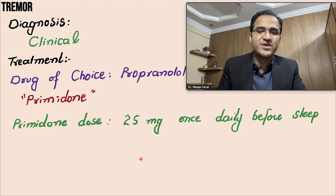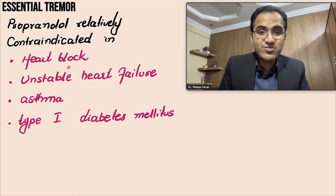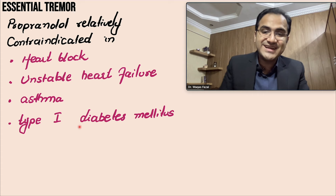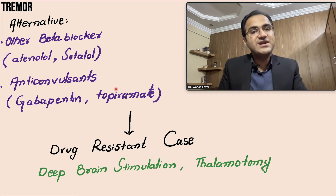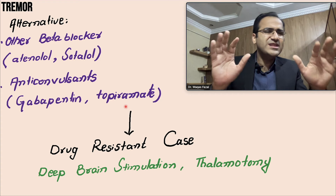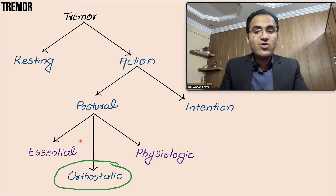Propranolol is relatively contraindicated in patients with heart block because it causes bradycardia, in unstable heart failure, in asthmatics, and in type 1 diabetics. Other alternatives include atenolol or anticonvulsants like gabapentin and topiramate. In severe essential tremor, these can be used. Otherwise, most patients have mild tremor requiring no treatment. In drug-resistant cases, deep brain stimulation and thalamotomy can be done.